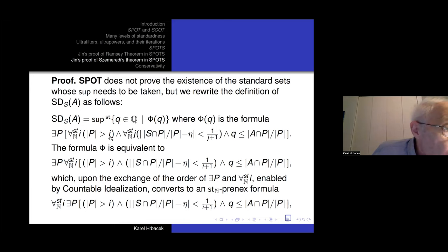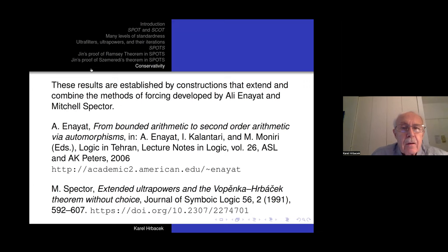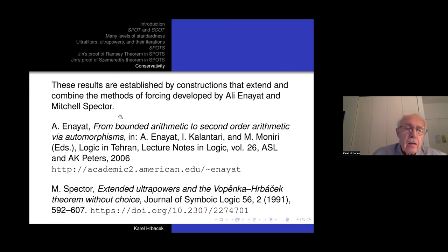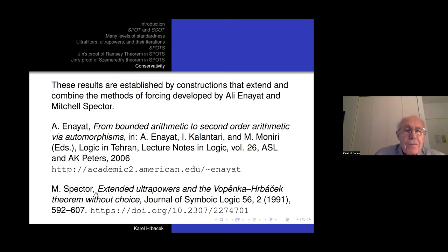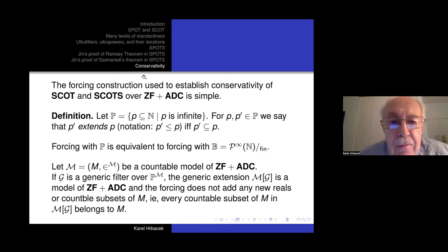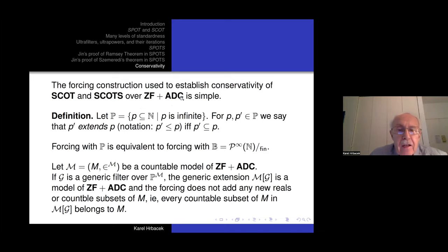Let me say something about the conservativity results. These results are established by showing that every countable model of ZF can be extended to a countable model of SPOT, and similarly every countable model of ZF plus dependent choice can be extended to a countable model of SCOTT or SCOTS. The forcing used has been employed by Avraham and others in second-order arithmetic and by Mitchell Spector in the theory of large cardinals without the axiom of choice.